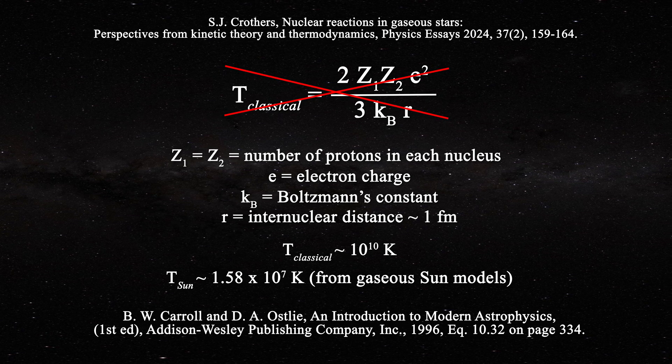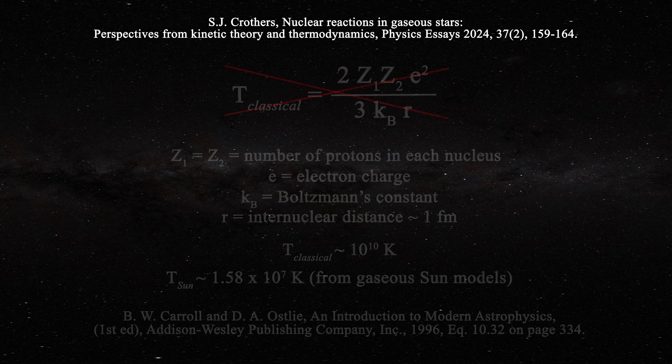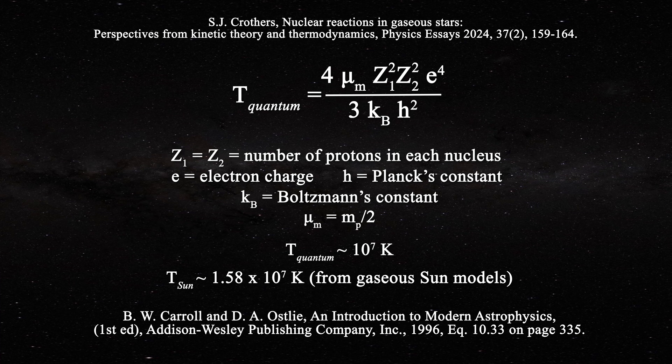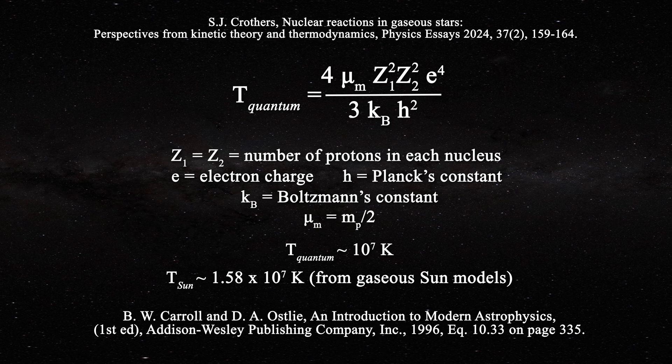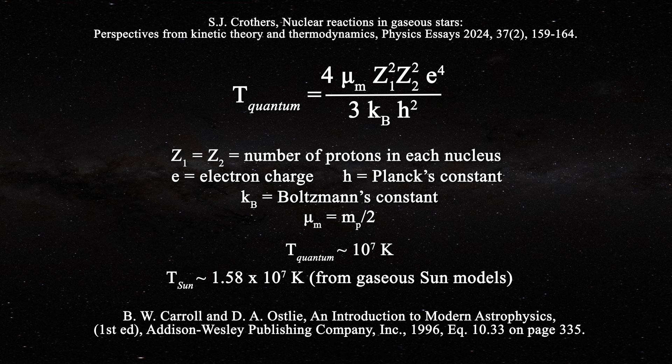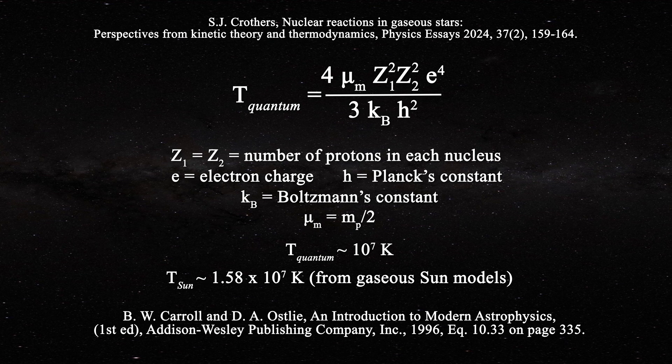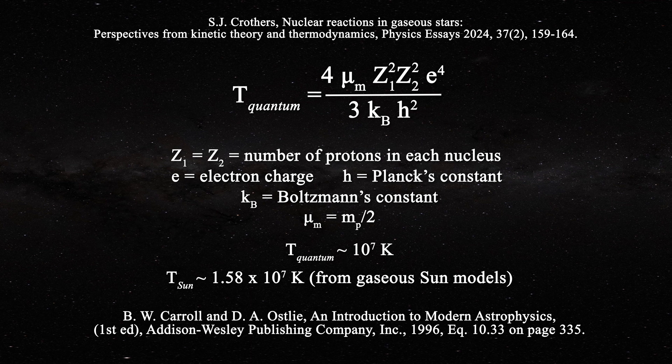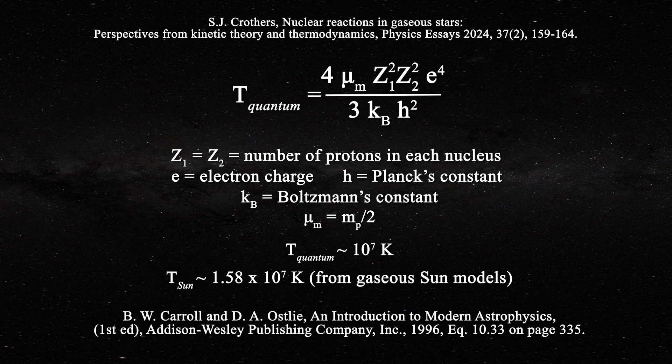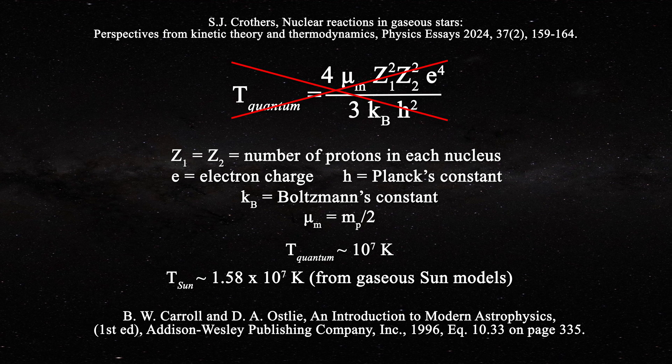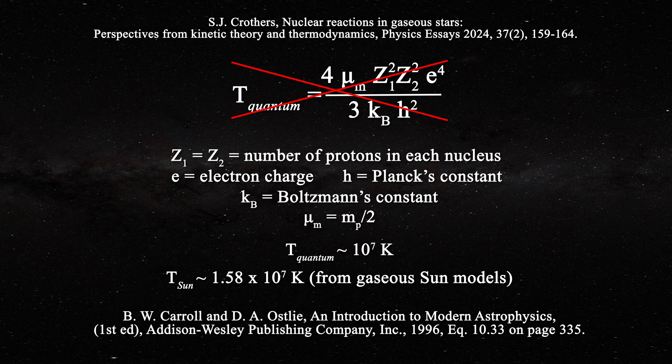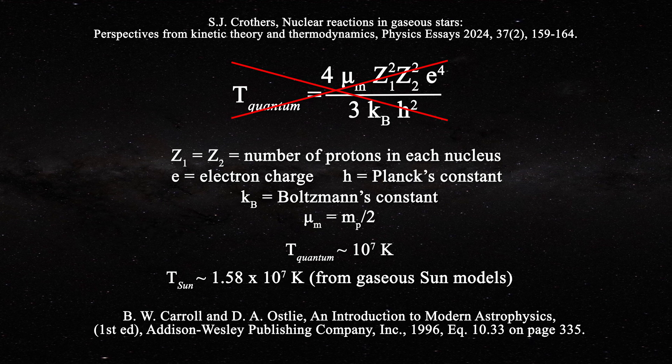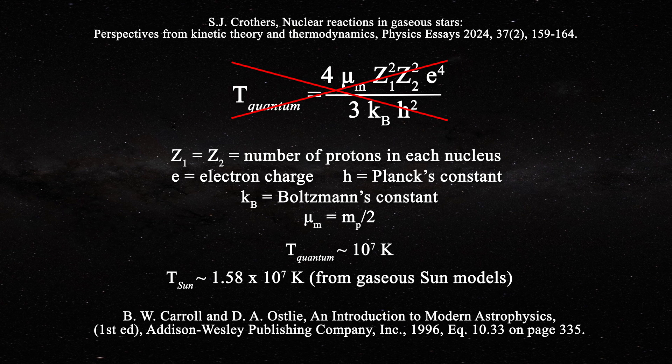In an attempt to overcome the insufficient temperature for the solar interior to produce nuclear reactions, a new expression is advanced in quantum mechanical terms for a proton to tunnel through the Coulomb barrier. But once again, this equation is thermodynamically invalid, because the right side is composed only of pure numbers and physical constants, none of which have any thermodynamic character, whereas the left side has intensive thermodynamic character. One cannot equate temperature only to pure numbers and physical constants, because neither has any thermodynamic character.